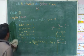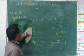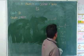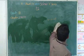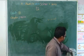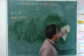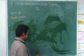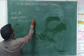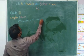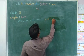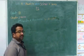Now let us see the second equation of linear motion. The second equation of linear motion is S is equal to UT plus half AT squared. This is the second equation of linear motion.